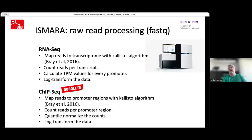For raw read processing of RNA-seq, we first map reads to the transcriptome with the Kallisto program, then count how many reads we have per transcript — as was shown by Eric in the morning. We calculate TPM values for every promoter, log transform the data, and then analyze it.